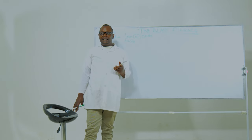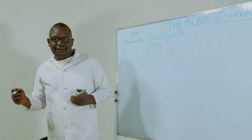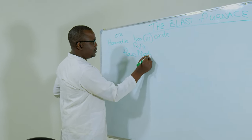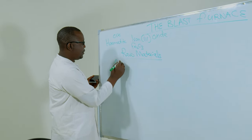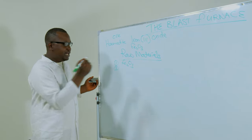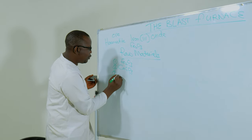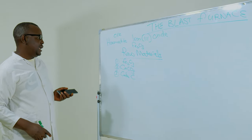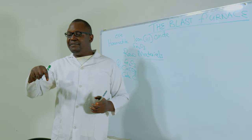In the blast furnace, the first things you need to understand are the raw materials required. Number one, we require hematite — iron(III) oxide. Number two, we require limestone, which is calcium carbonate, CaCO3. And we also require coke, which is carbon. These three raw materials are fed at the top of the blast furnace.